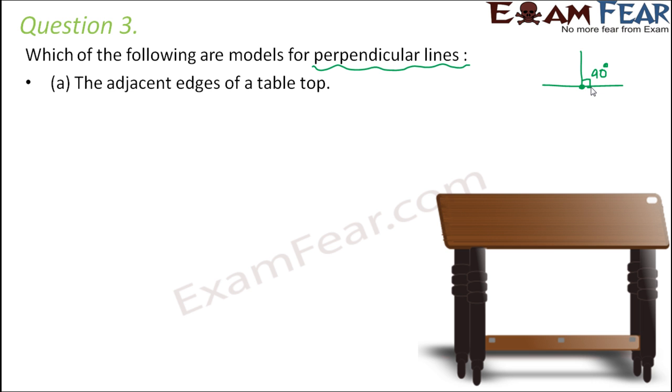So the adjacent edges of a table top. So if you look at the table top, you would see that this side and this side, these are the adjacent edges, the adjacent sides. So are they perpendicular to each other? Yes, they are. Because when you look at a table top, the table top is like rectangular in shape. If we are talking about a general rectangular table top, in that case their adjacent sides are perpendicular to each other.